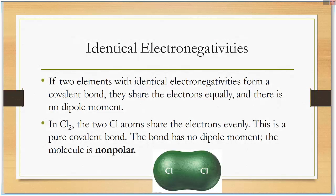If two elements with identical electronegativities form a covalent bond, they share the electrons equally and there is no dipole moment. In chlorine Cl2, the two chlorine atoms share the electrons evenly. This is a pure covalent bond. The bond has no dipole moment because no chlorine is more electronegative than the other. The molecule is called nonpolar.